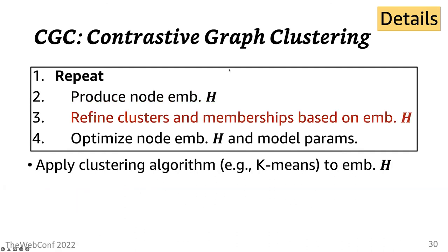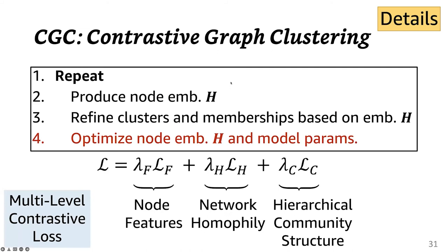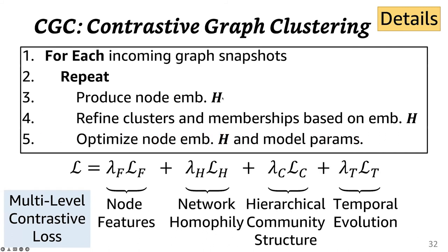Then based on the updated cluster memberships and centroids, CGC computes the multi-level contrastive loss introduced earlier and optimizes model parameters. When new events occur over time, then we can extend these algorithms such that it performs these steps repeatedly as new graph snapshots arrive using this extended multi-level contrastive loss.